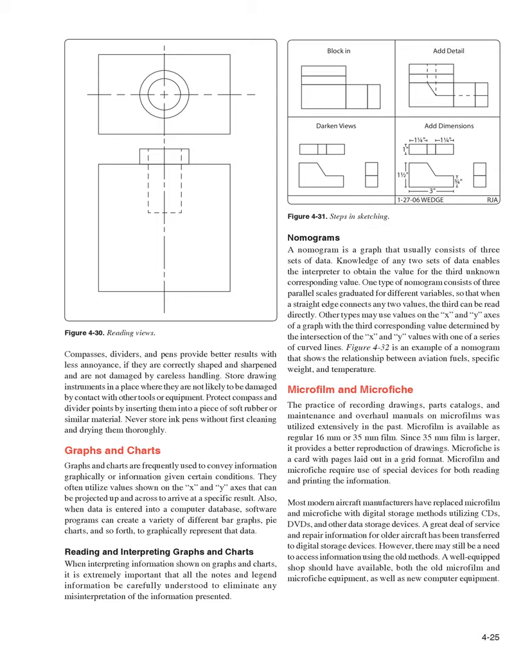Microfilm and microfiche: Recording drawings, parts catalogs, and maintenance and overhaul manuals on microfilm was utilized extensively in the past. Microfilm is available as regular 16mm or 35mm film; 35mm provides better reproduction of drawings. Microfiche is a card with pages laid out in a grid format. Both require special devices for reading and printing. Most modern aircraft manufacturers have replaced microfilm and microfiche with digital storage methods utilizing CDs, DVDs, and other data storage devices. A great deal of service and repair information for older aircraft has been transferred to digital storage, but there may still be a need to access information using old methods, so a well-equipped shop should have both old and new equipment available.